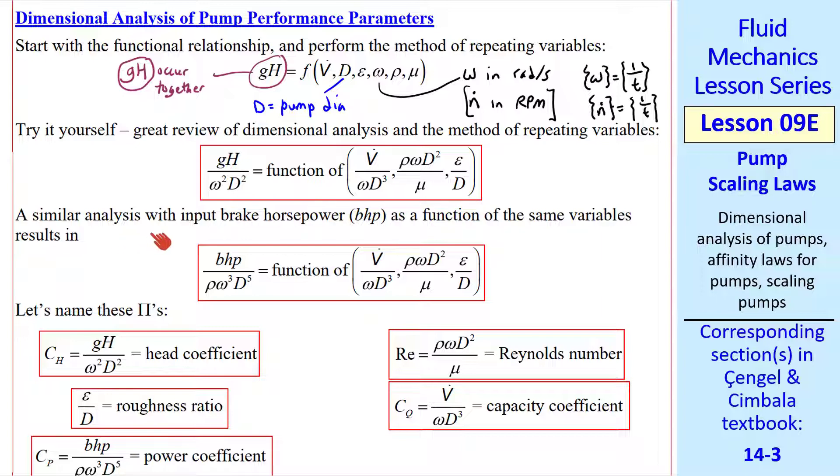GH over omega squared D squared is the dependent pi. We have 3 independent pi's. We do another dimensional analysis with brake horsepower instead of GH as a function of these same variables. When you go through that dimensional analysis, you again get 4 pi's.